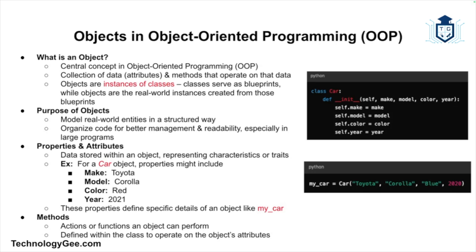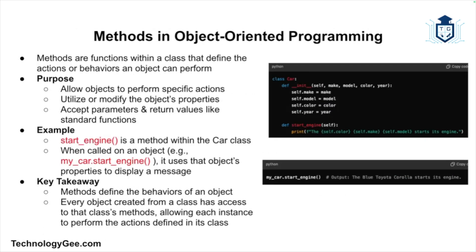Properties or attributes are the data stored within an object and represent the characteristics or traits of that object. For example, if we had an object representing a car, its properties could include color, make, model, and year. In the image on screen, make, model, color, and year are the attributes of the car class. When you create an object from this class you can assign these attribute values, so the object 'my_car' now has properties that describe the specific car.